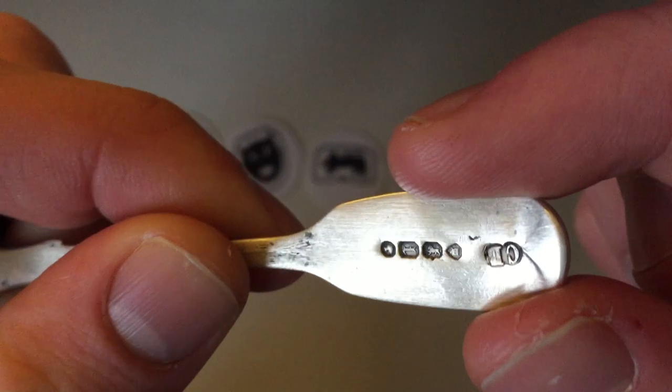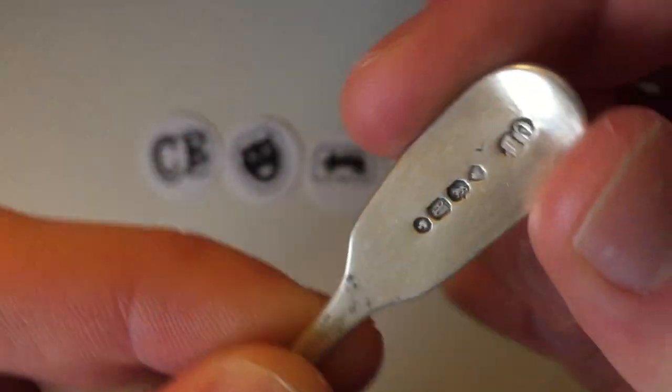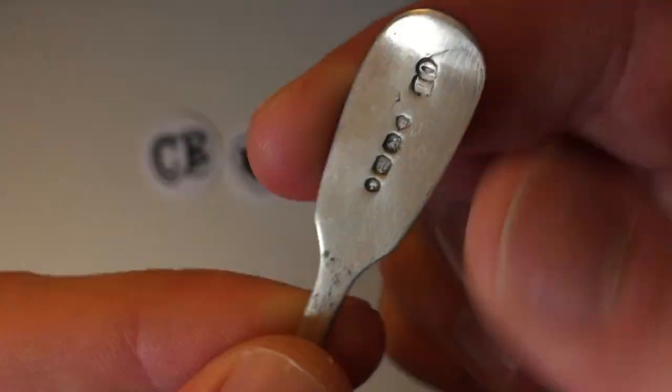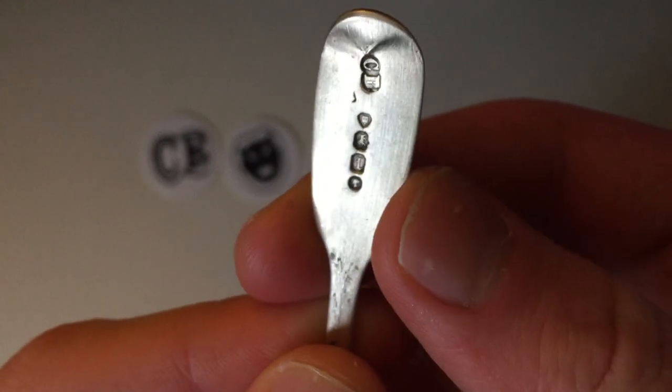There we go. And then, along there, you've got the sterling mark, the lion, the date letter, which is an L in this case, and then the duty mark, which is Victoria.